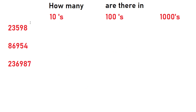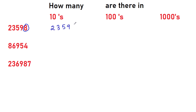Same way for thousands also — if you want to find thousands, you will leave three digits and tell the rest. Now see this example. How many tens are there in 23,598? If you want to write how many tens, you leave one zero and write the rest of the number — it is 2,359 tens.